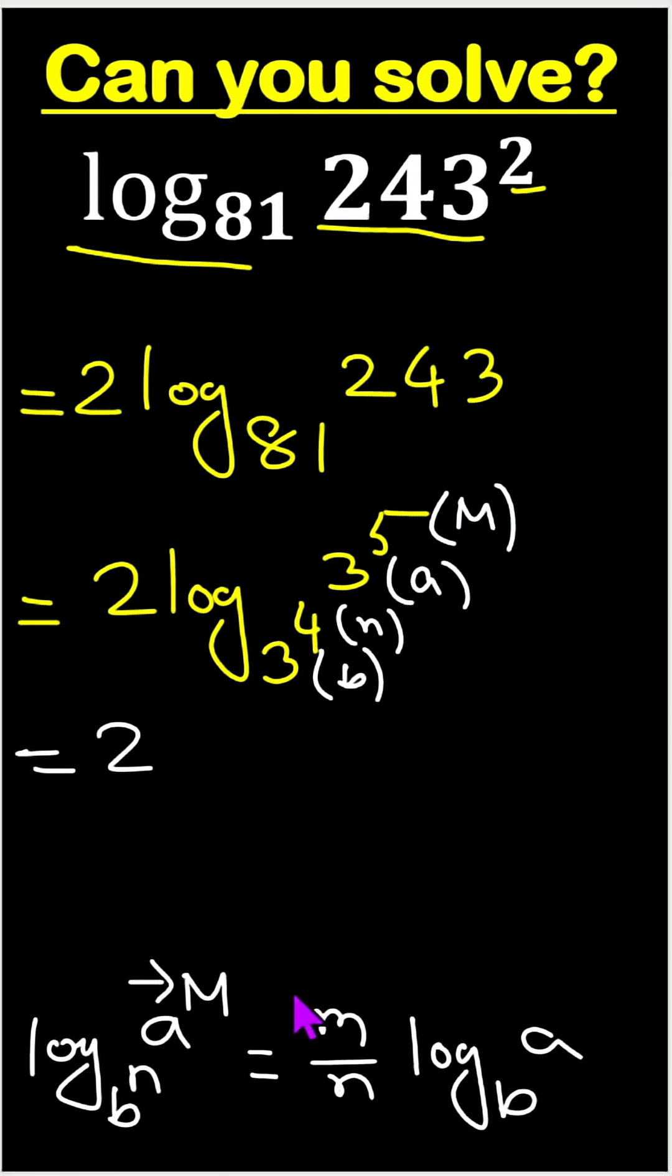So m by n, m is 5, so 5 by n means 4. Now log b of a. So b is 3, a is also 3. We know log a of a is 1. So our answer is 4 divided by 2, which is 2.